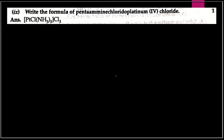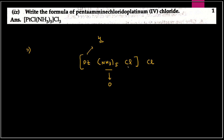Question number nine: write the formula of pentaminechloridoplatinum. Pentamine means NH3 — five of them. Chlorido means it is inside as a ligand. Platinum has charge, and if chloride is inside as ligand with charge -1, then from the remaining charge we balance with external chloride ions. Three chlorine atoms are needed to balance the +3 charge of the complex.